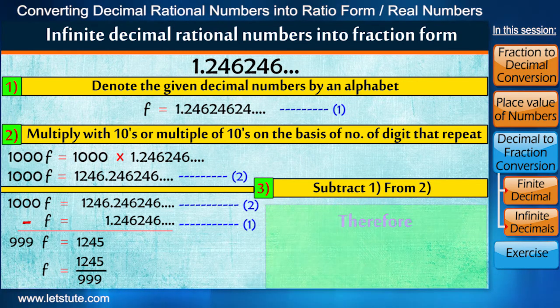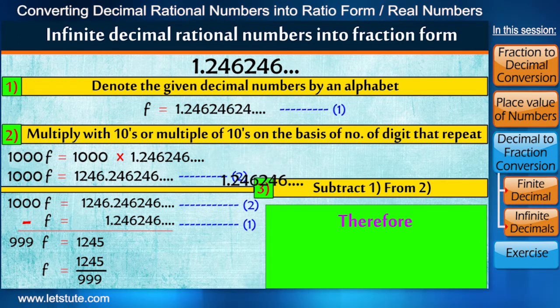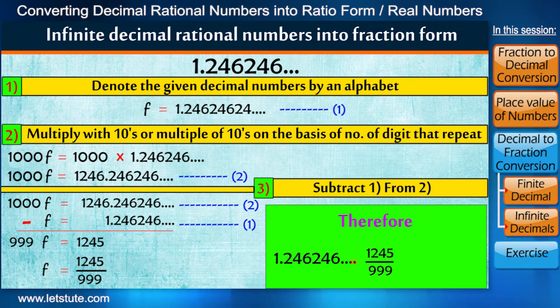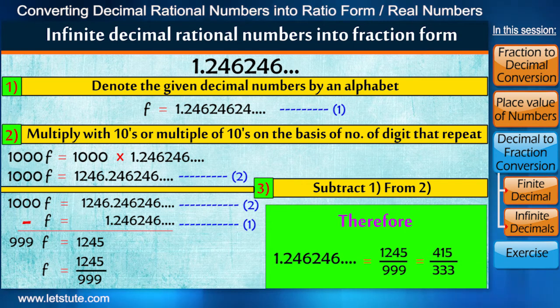And we have got the fraction as 1245 upon 999. This means that the fraction form of decimal number 1.246246 is equal to 1245 upon 999. You can also simplify this to 415 upon 333.